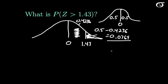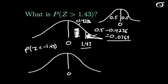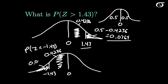The table only has positive z values, but this doesn't pose much of a problem due to the symmetry about 0. For example, if we wanted the probability that z is less than minus 1.43, we draw our picture with 0 and minus 1.43 on the left. By symmetry, the area between 0 and minus 1.43 equals the area between 0 and 1.43, which is 0.4236, and the tail beyond minus 1.43 is 0.0764.